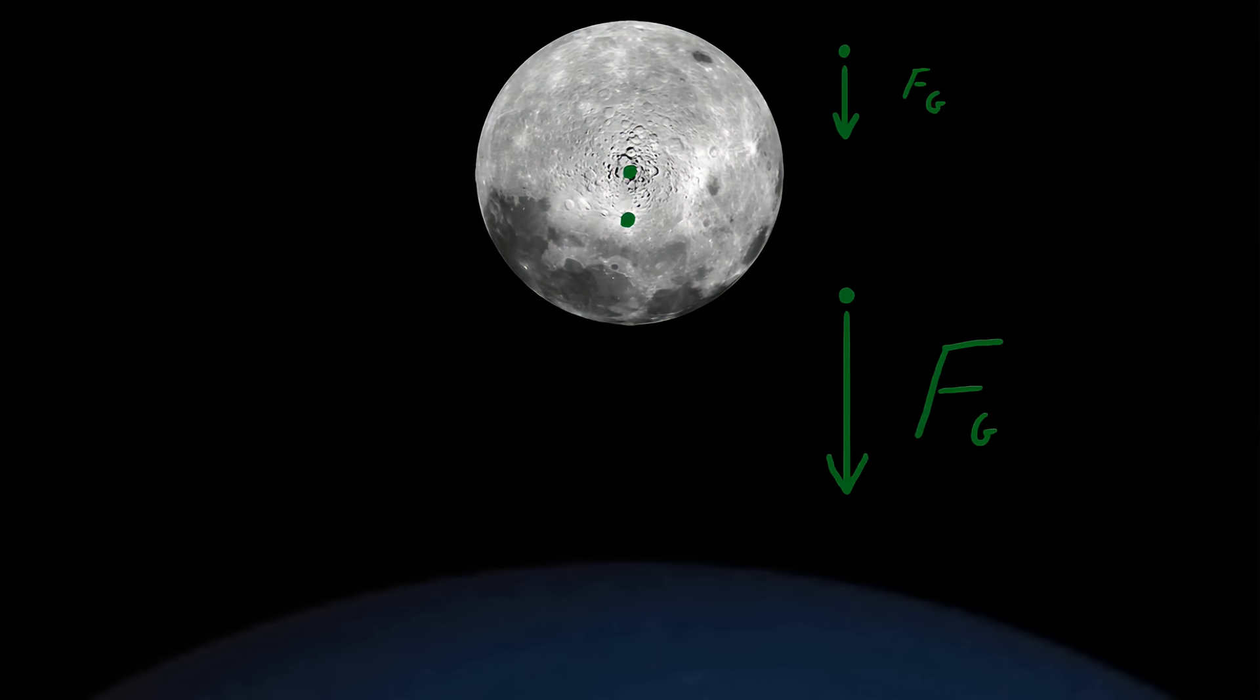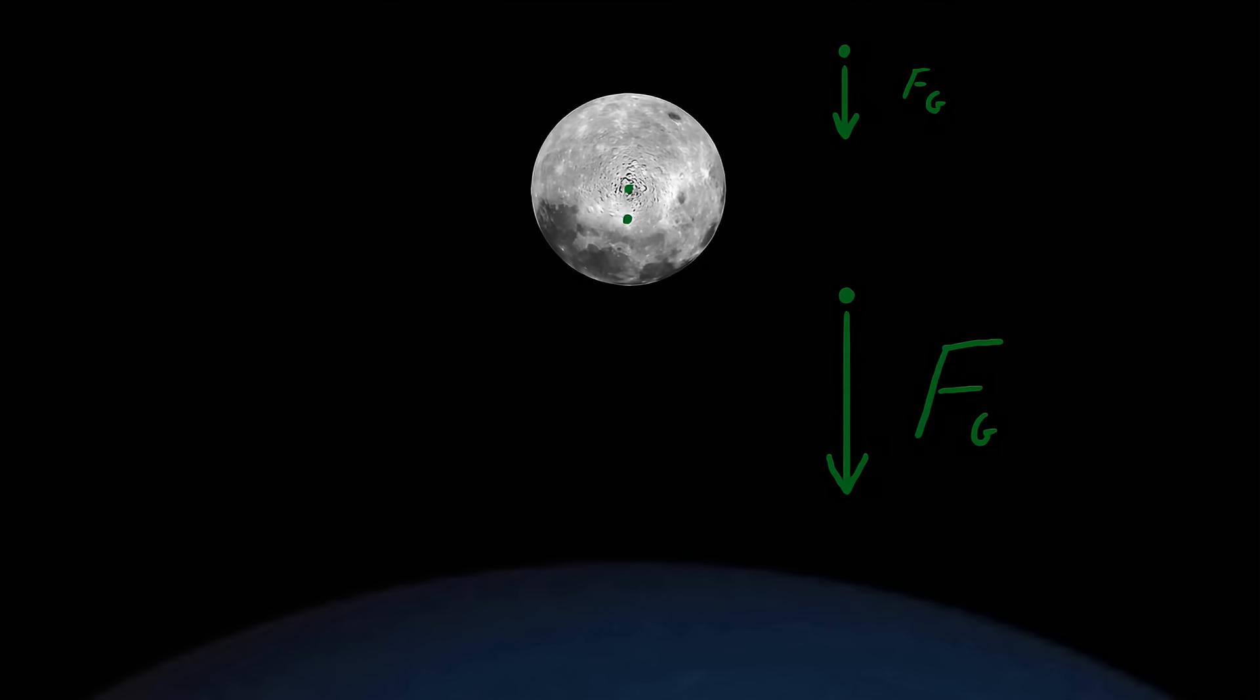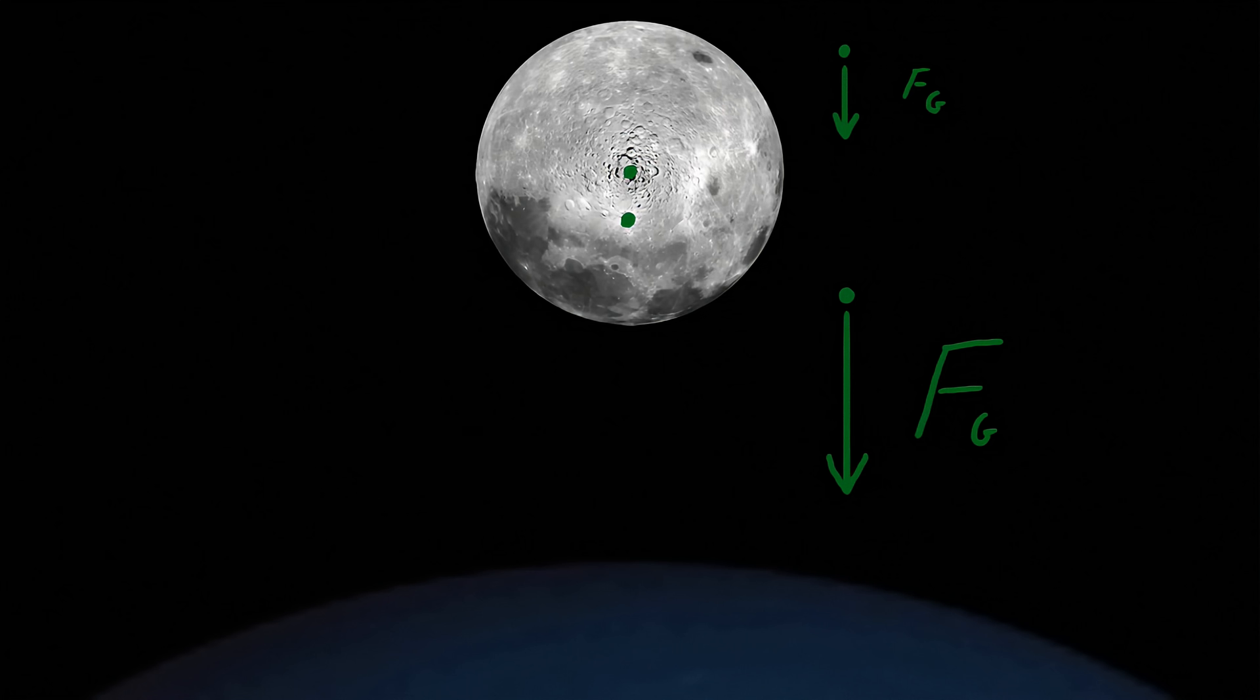The moon's center of gravity is the point upon which all of Earth's gravity appears to act. You could scrunch the moon to the single point and, gravitationally speaking, there'd be no difference. If Earth's gravity acted uniformly across the moon, the center of gravity would be the same as the moon's center of mass, which is the average point of the mass of all the atoms within the moon.